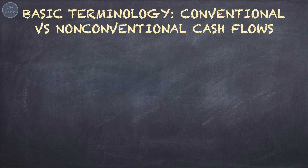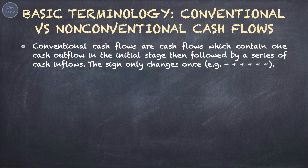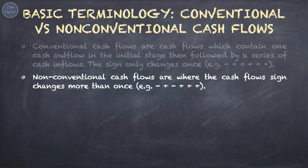Next, conventional cash flow versus non-conventional cash flow. Conventional cash flows contain one cash outflow in the initial stage, followed by a series of cash inflows — the sign only changes once. At the initial year you pay to invest, and afterwards you receive cash inflows. However, non-conventional cash flows are where the cash flow sign changes more than once, meaning you have more than one negative cash flow after year zero. For example, you pay to invest at year zero, year one you receive a positive cash flow, but you pay again at year two — that's a negative cash flow — and then from year three onwards you receive positive cash flows continually. For the following calculation part, we will mostly deal with conventional cash flows.